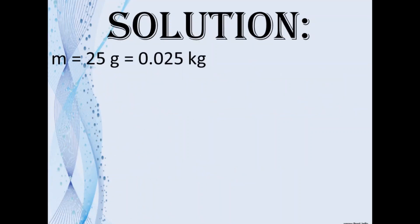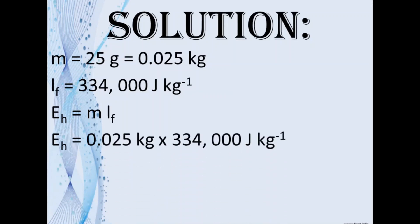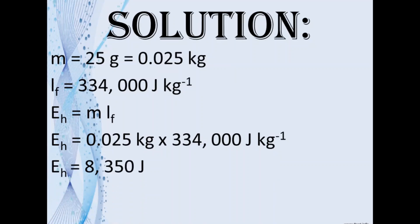We start by identifying our givens, and in this case, we need to convert from grams to kilograms. We write down the value for the specific latent heat of fusion, and then we write our formula. We substitute 0.025 kilograms multiplied by 334,000 joules per kilogram, and that would give you 8,350 joules.